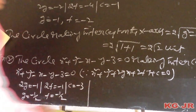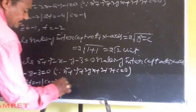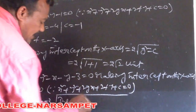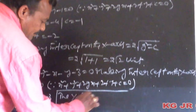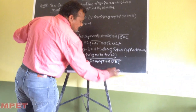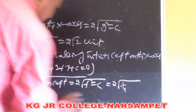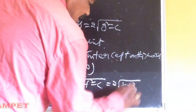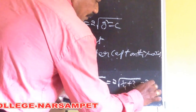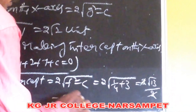Now finding the intercept the circle makes on the y-axis. The y-intercept is 2 into root of f square minus c. Here f square equals (minus 1/2)² equals 1/4, and c equals minus 3. So 2 into root of (1/4 plus 3) equals 2 into root of 13/4. Under root of 4 cancels to give the y-intercept as √13 units.